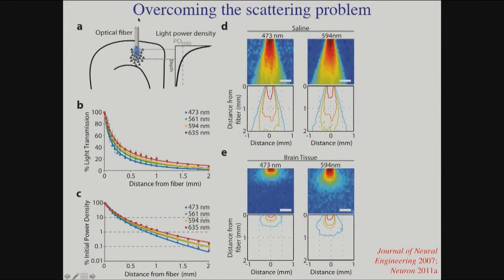Light is heavily scattered in neural tissue due to the refractive index changes between lipid and water. The drop-off of light power density as a function of depth in tissue is dramatic — you're down to one percent of your initial irradiance values by the time you're just one millimeter deep in tissue. So you can't just apply surface light, but you can put in a fiber optic.